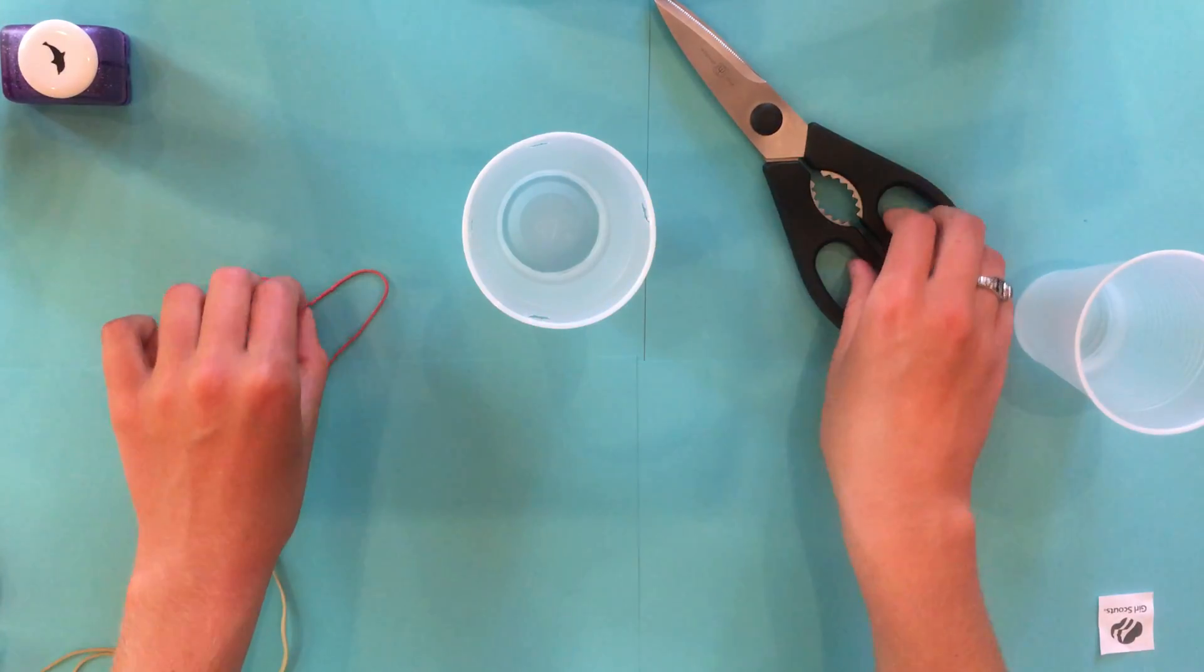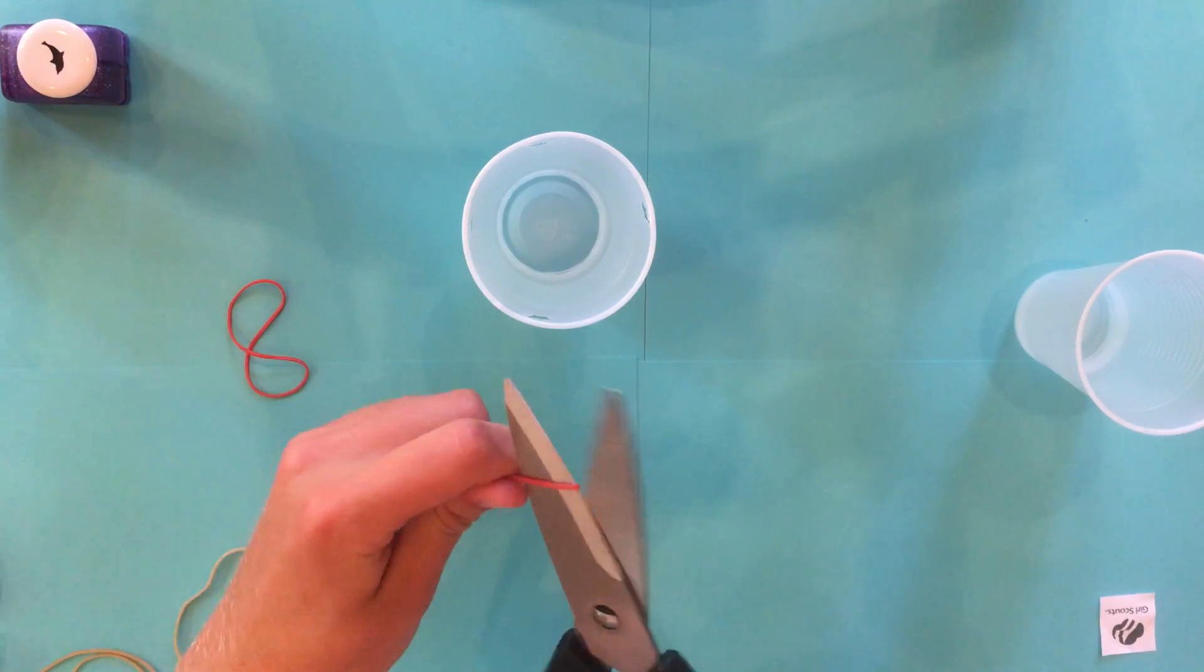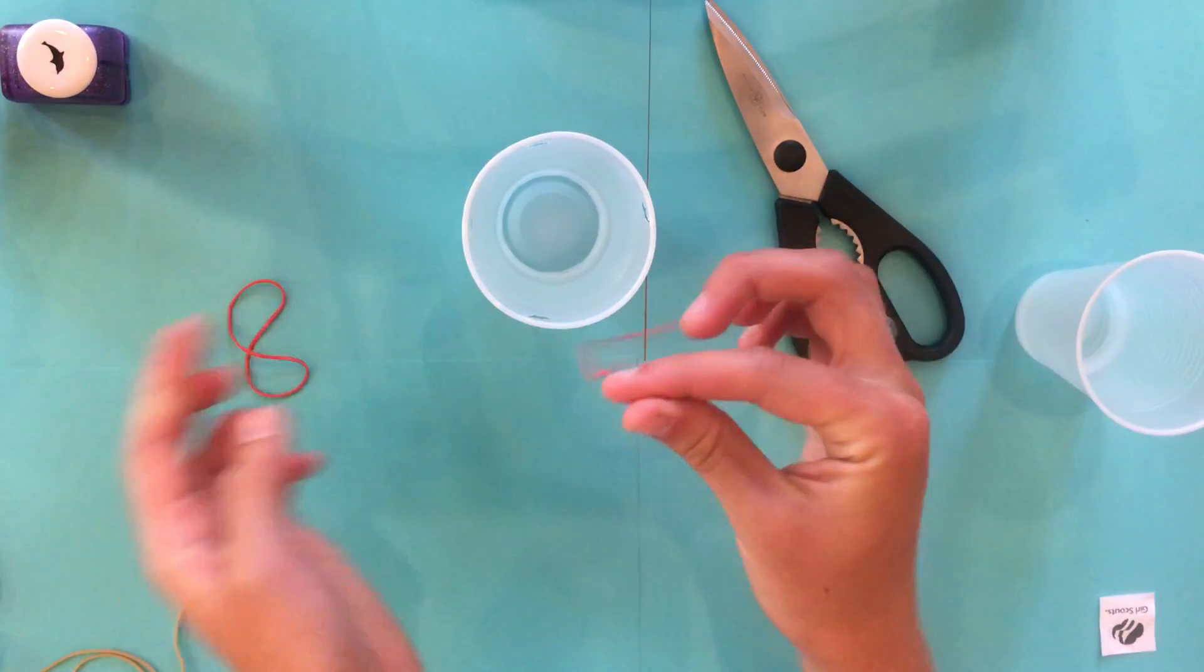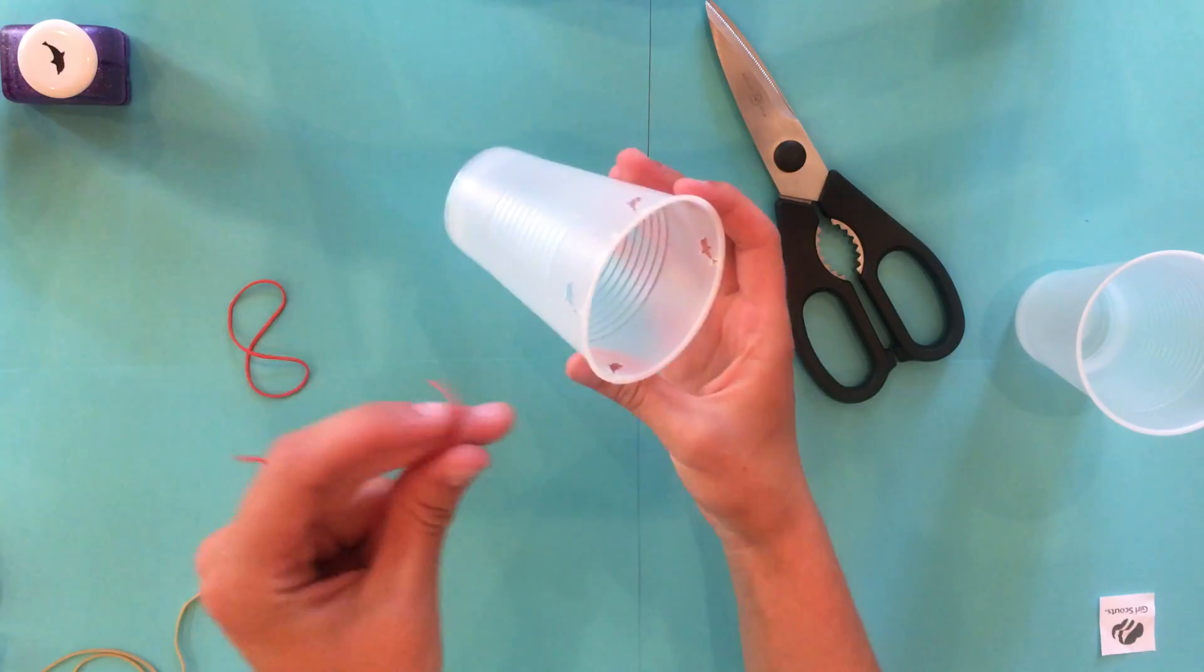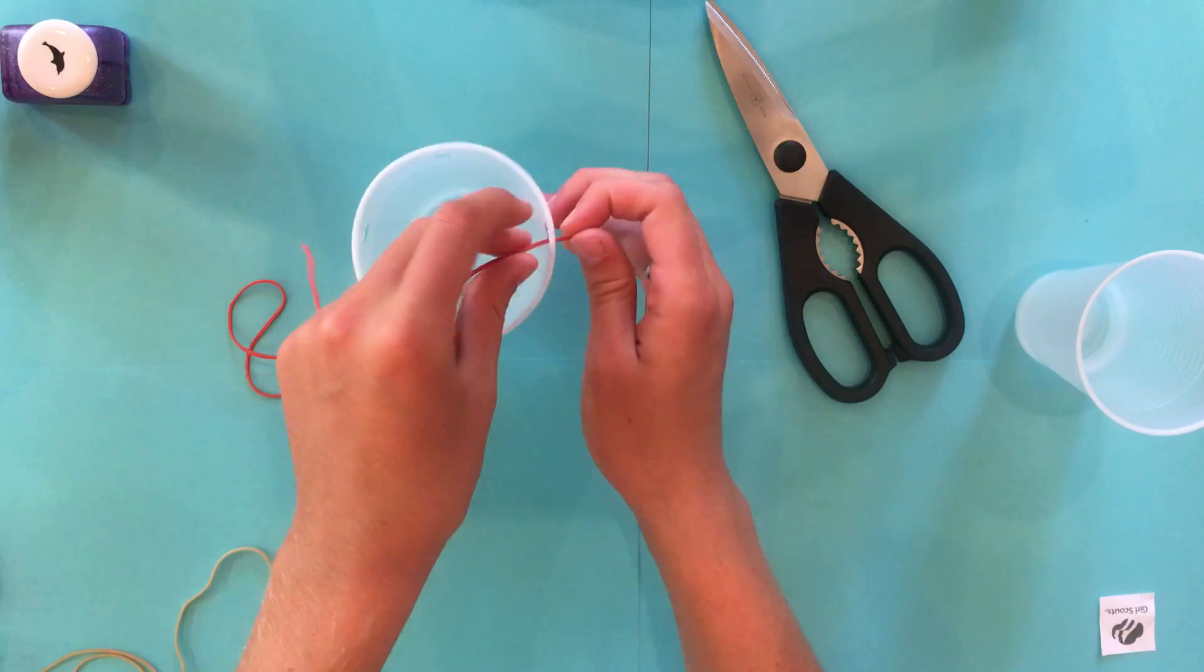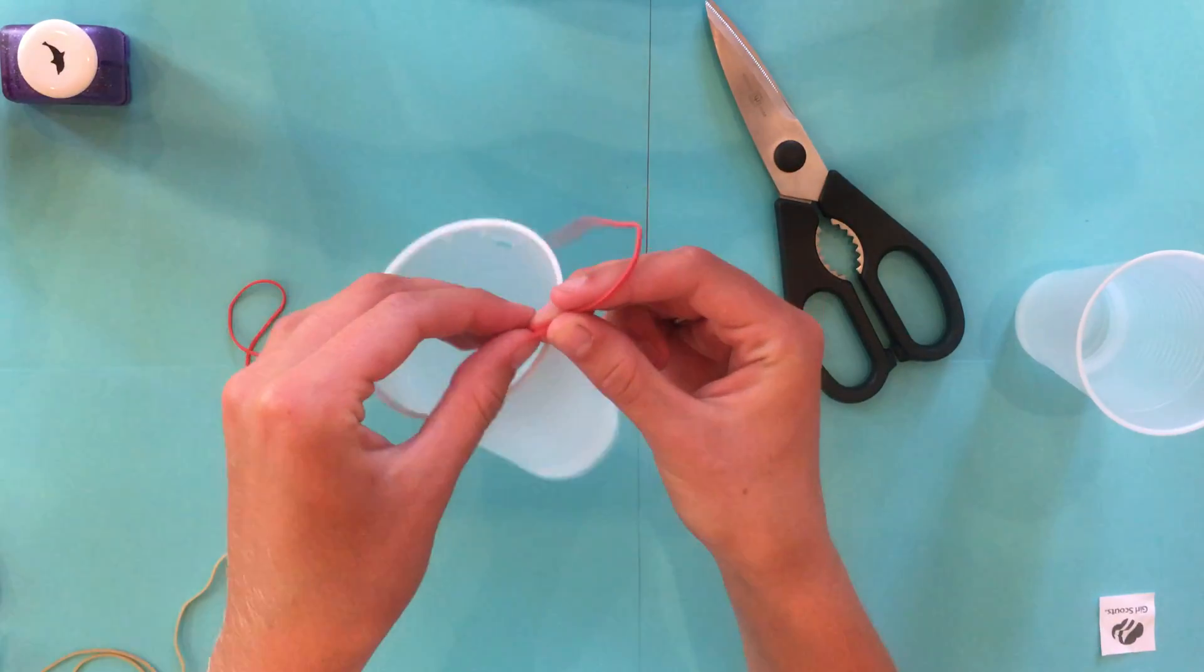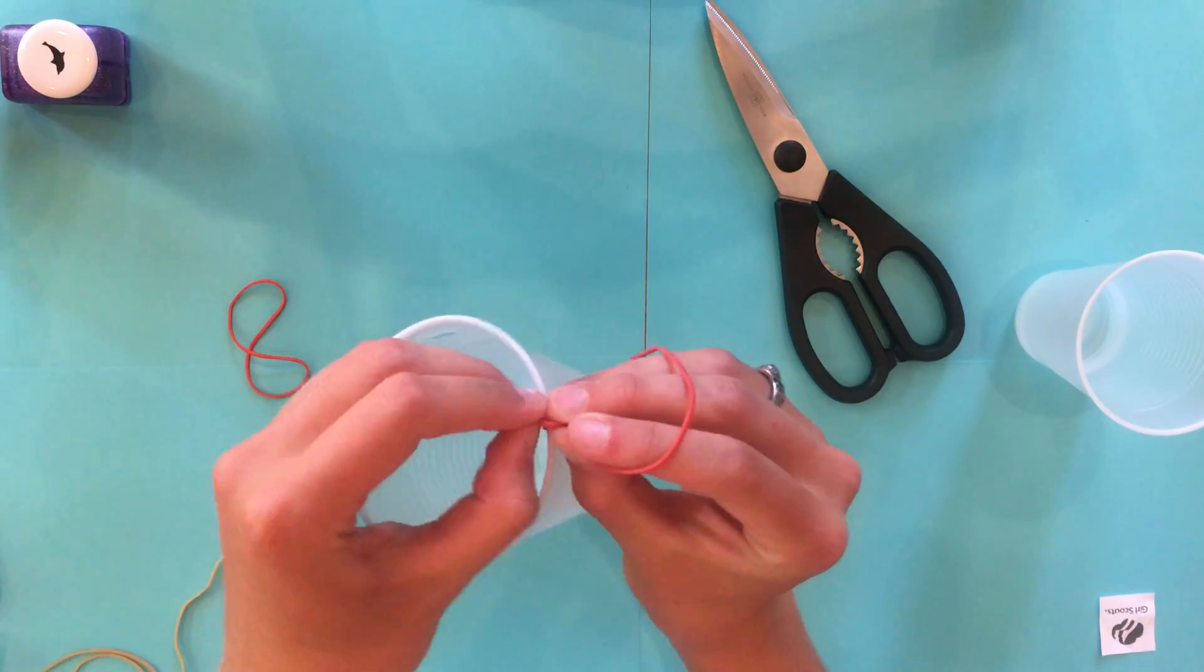After you do that, you want to take your rubber band, cut it so it's just a rubber string, put it through one of the holes, and tie a knot. I would suggest tying double knots with this as well.